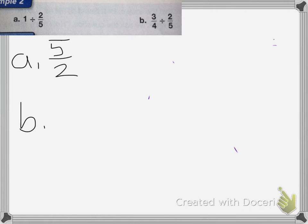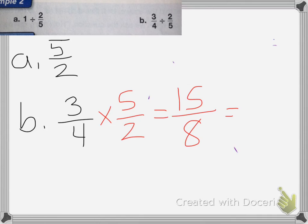For B, we're going to use the information here to solve how many two-fifths there are in three-fourths. So I'm going to have three-fourths, and I'm going to multiply that by my reciprocal five-halves. So 3 times 5 is 15, 4 times 2 is 8, so my answer is 1 and seven-eighths.